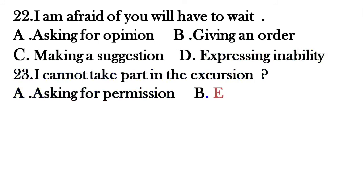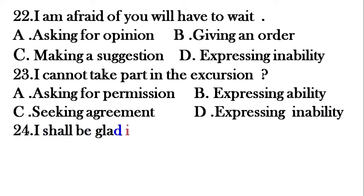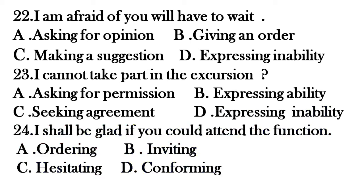Question number twenty-two: 'I am afraid you will have to wait.' Options: A: asking for opinion, B: giving an order, C: making a suggestion, D: expressing inability. Question number twenty-three: 'I cannot take part in the excursion.' Options: A: asking for permission, B: expressing ability, C: seeking help, D: expressing inability. Question number twenty-four: 'I shall be glad if you could attend the function.' Options: A: ordering, B: inviting, C: hesitating, D: confirming.